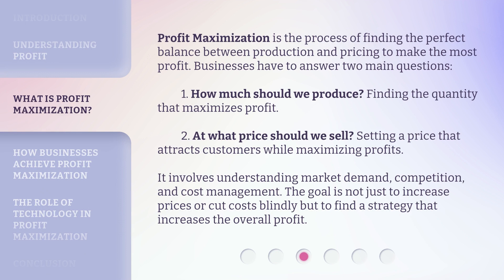Profit maximization is the process of finding the perfect balance between production and pricing to make the most profit. Businesses have to answer two main questions. One: how much should we produce — finding the quantity that maximizes profit. Two: at what price should we sell — setting a price that attracts customers while maximizing profits. It involves understanding market demand, competition, and cost management. The goal is not just to increase prices or cut costs blindly, but to find a strategy that increases the overall profit.